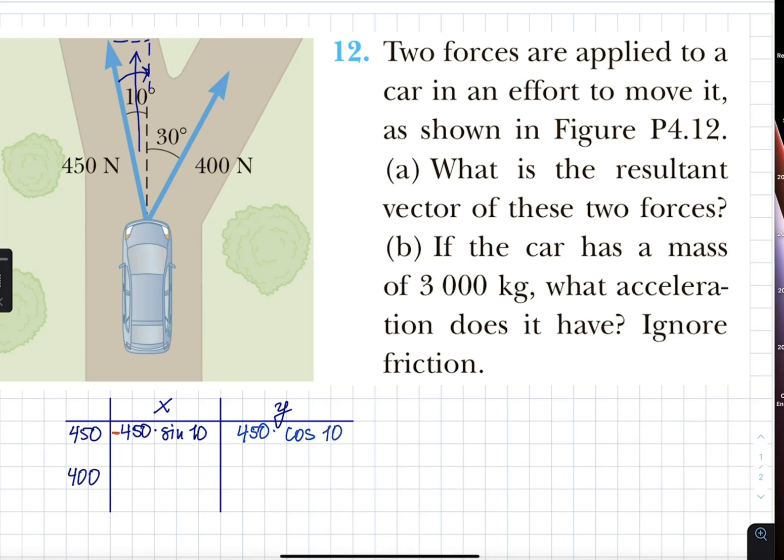On the other hand, for 400, here are my x and y components. Again, x is sine, and it's positive because it's pointing to the right. 400 sine of 30, so that's 200, and then 400 cosine of 30 in the y department. Positive again, because it's pointing upward. I'm going to pause, calculate, and come back.